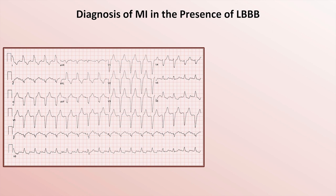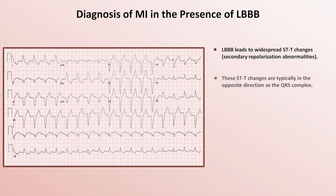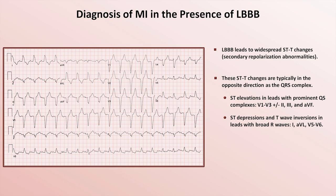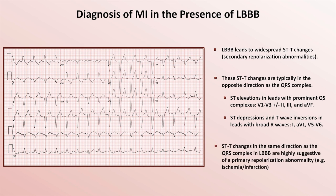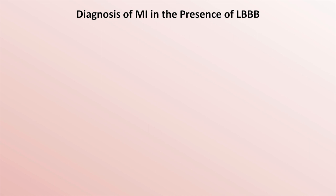The final special situation to discuss is how to diagnose an acute STEMI in the presence of a pre-existing left bundle branch block. This is particularly challenging since left bundle branch blocks lead to widespread secondary ST and T changes, typically in the opposite direction as the QRS complex. This leads to ST elevations in leads with prominent QS complexes such as V1 through V3, and occasionally leads 2, 3, and AVF, and ST depressions and T wave inversions in leads with broad R waves such as 1, AVL, V5, and V6. STT changes in the same direction as the QRS complex in a left bundle branch block are highly suggestive of a primary repolarization abnormality, which usually means ischemia or infarction. Specific criteria using this principle, known as the SCARBOSA criteria, has been developed to aid in the diagnosis.